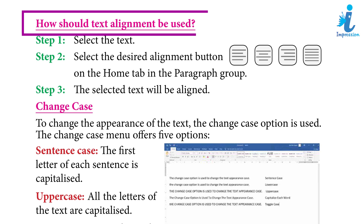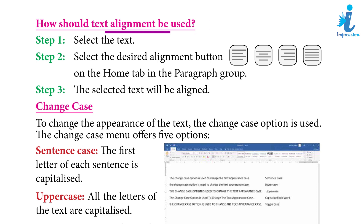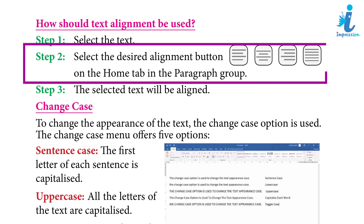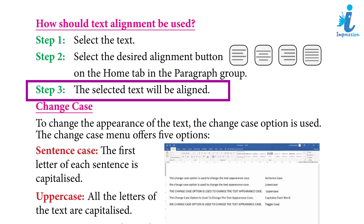How to use text alignment: Step 1. Select the text. Step 2. Select the desired alignment button on the Home tab in the Paragraph group. Step 3. The selected text will be aligned.